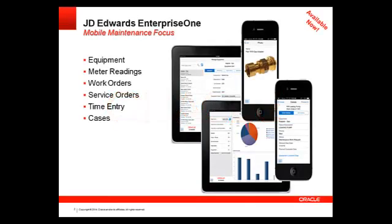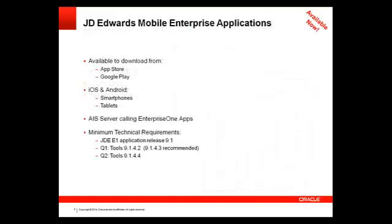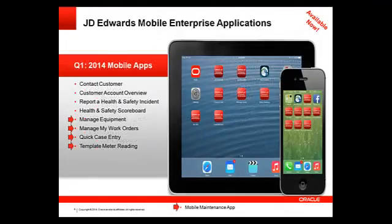I'd like to talk to you about our JD Edwards mobile applications for maintenance. Today, we have mobile applications available for equipment, meter readings, work orders, service orders, time entry, and cases. These are native smartphone and tablet applications that require JD Edwards Apps Release 9.1. These native apps are available at no additional cost and are integrated with mobile device features such as mapping, camera, GPS, and voice.